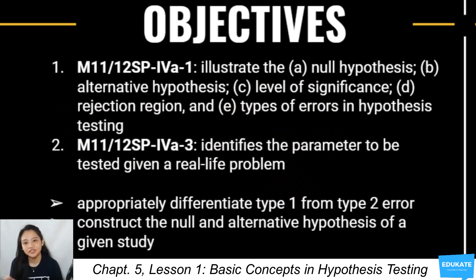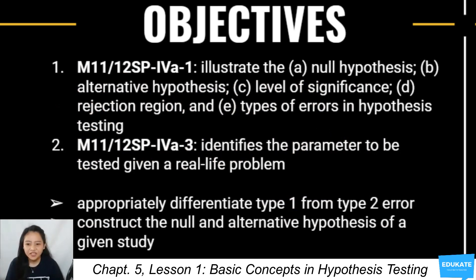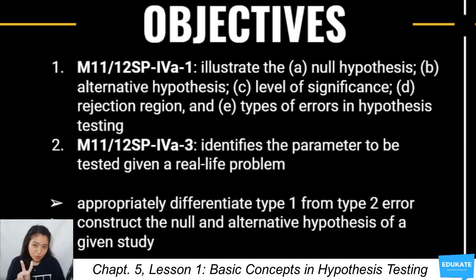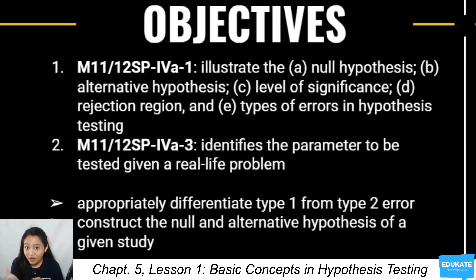The first objective is to illustrate the null and alternative hypothesis, level of significance, rejection region, and type of errors. The second objective is to identify the parameter to be tested given a real-life problem. There are also two sub-objectives: to appropriately differentiate type 1 from type 2 error, and to construct the null and alternative hypothesis of a given study.